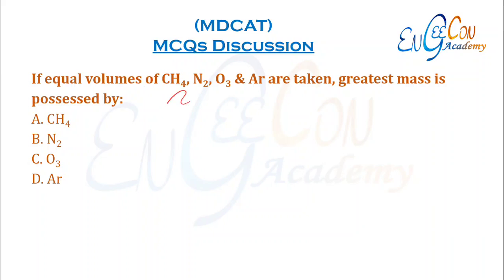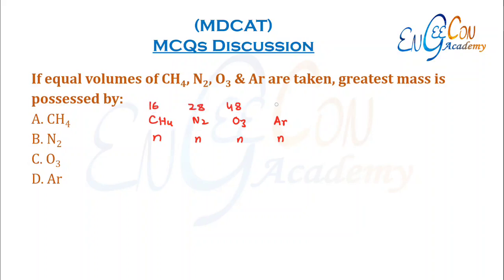If equal volumes of CH4, N2, O3, and argon are taken, equal volume means equal number of moles. The greatest mass is possessed by the gas with the greatest molar mass. So O3 has the greatest molar mass, and therefore its mass is the greatest.